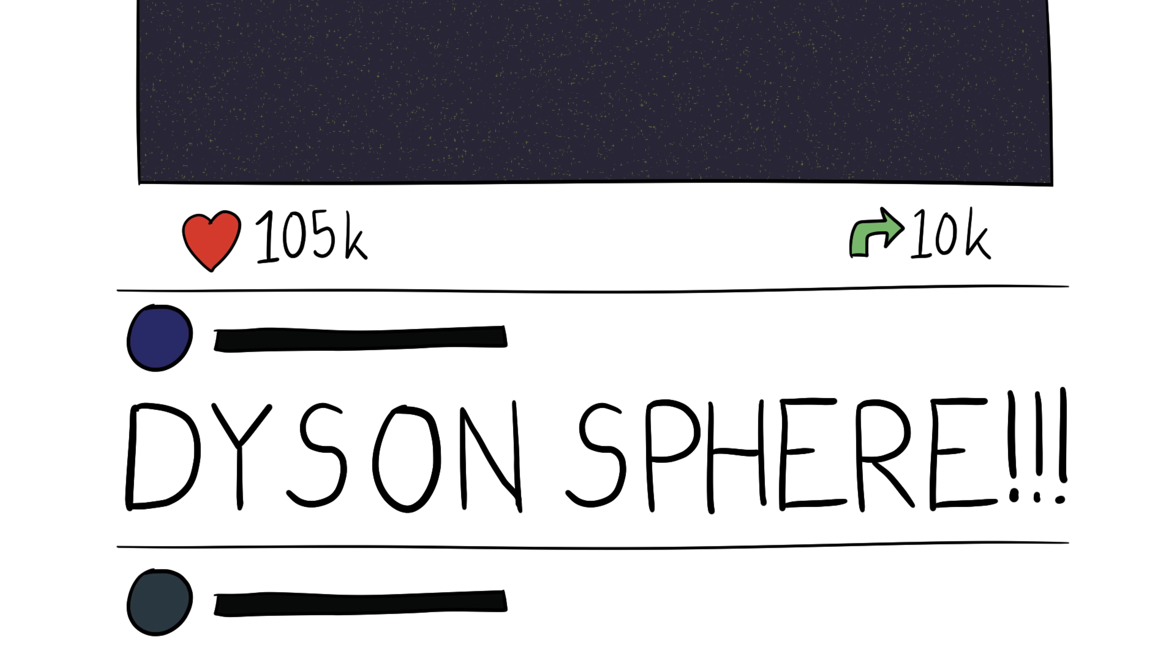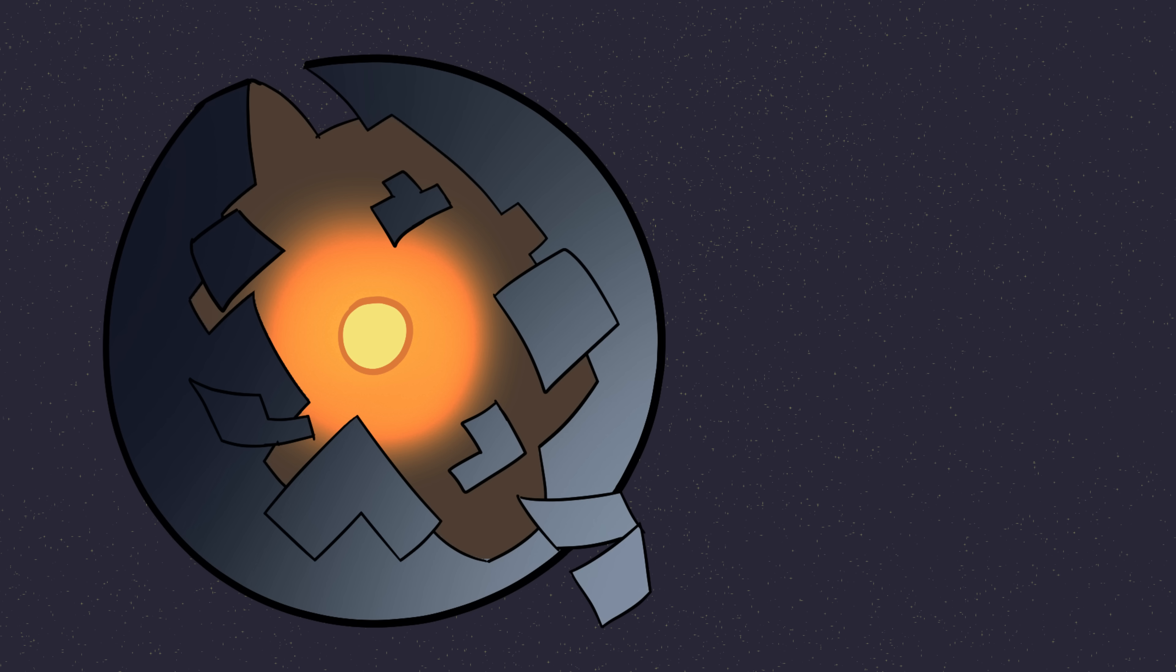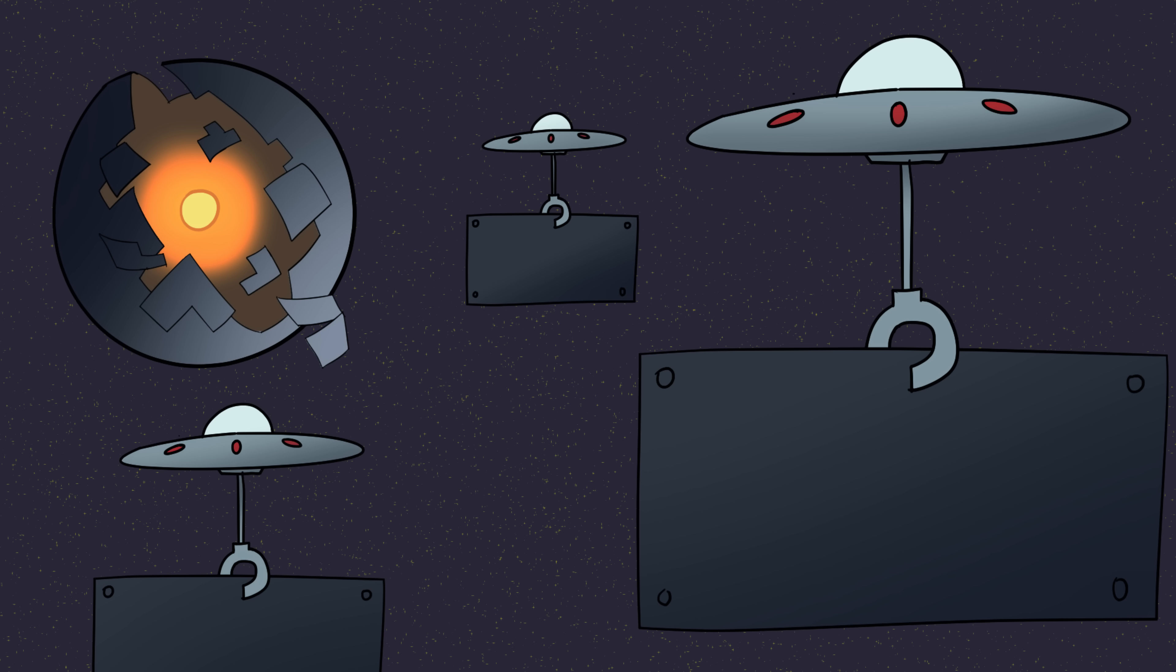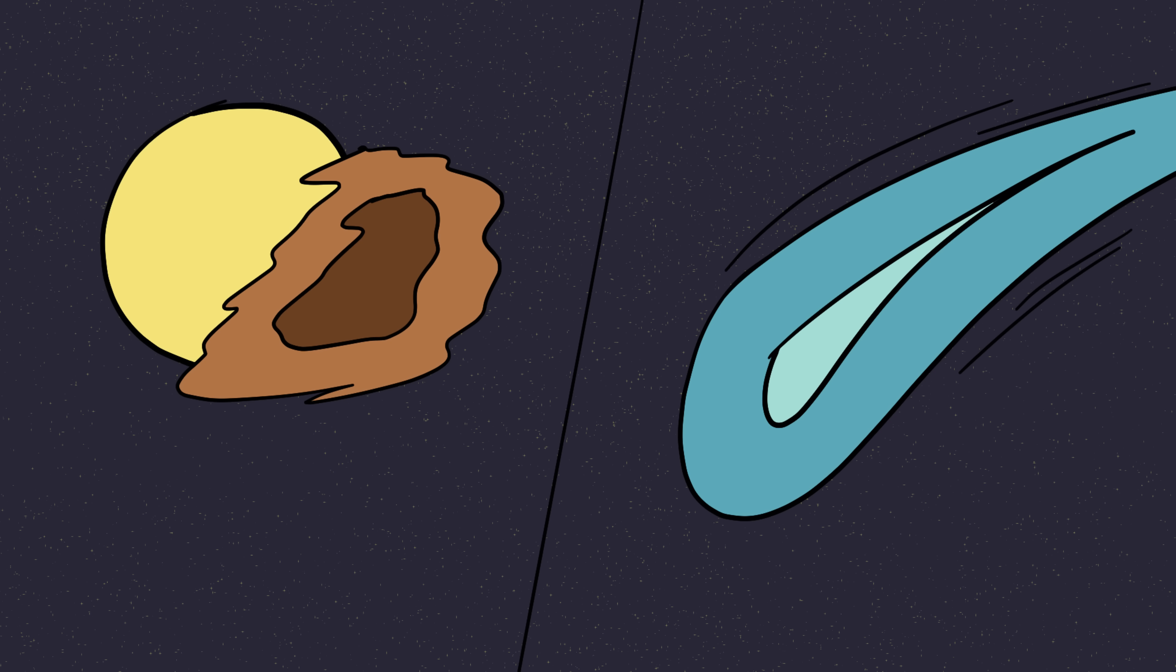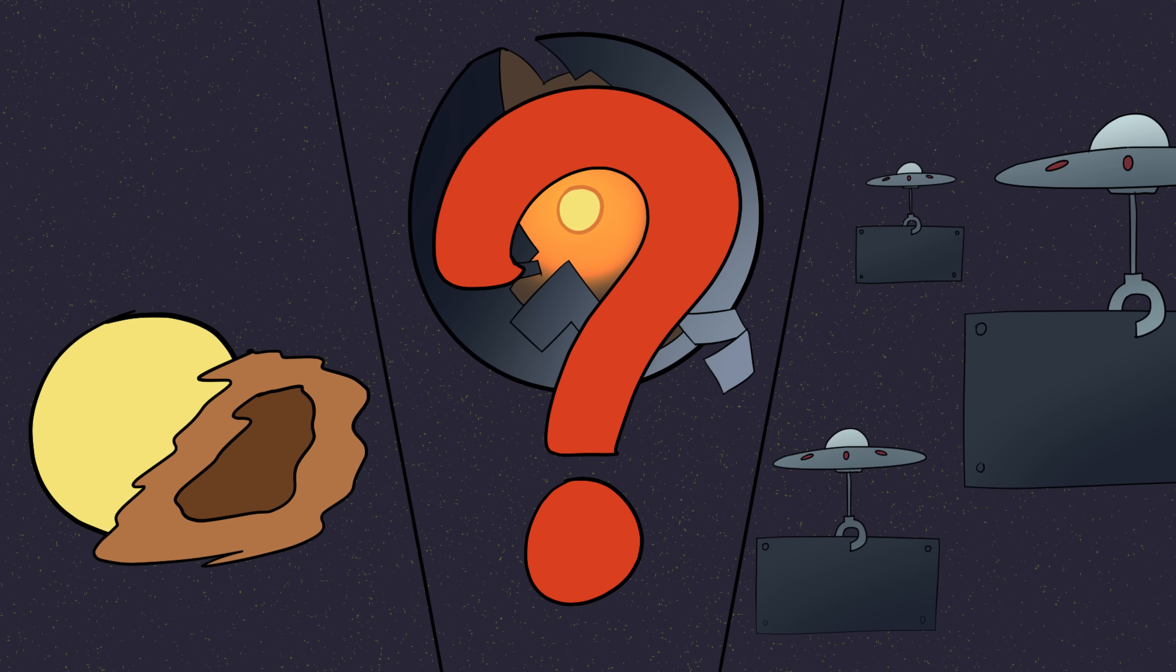Naturally, the internet lost its mind. One theory was that an alien civilization had built a Dyson Sphere. A gigantic structure wrapping around a star to harvest its energy. Think about that. Aliens building a machine the size of a solar system. Scientists have since suggested it might just be a giant swarm of dust or comets. But here's the creepy part. Dust doesn't explain everything.